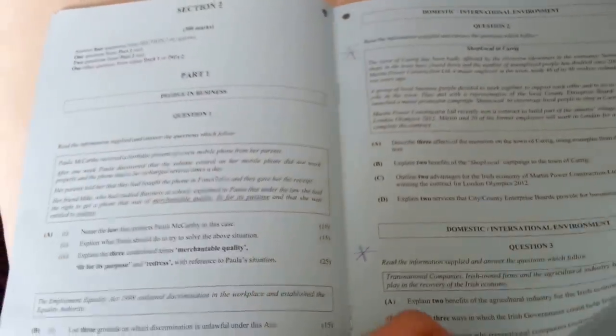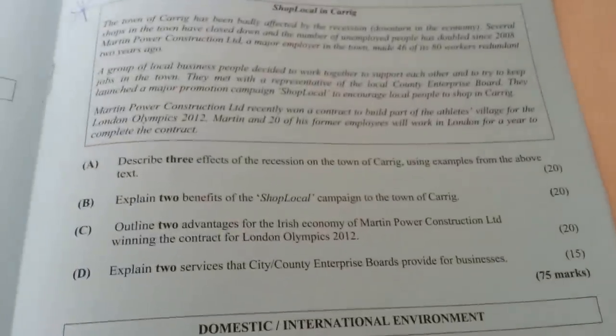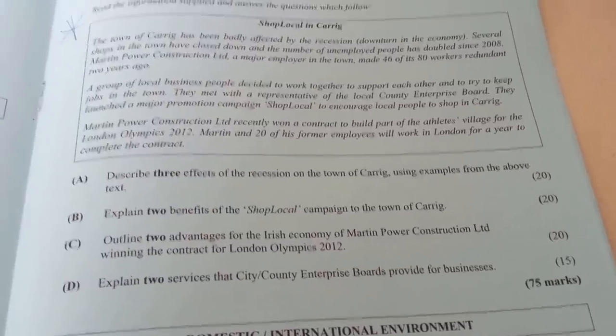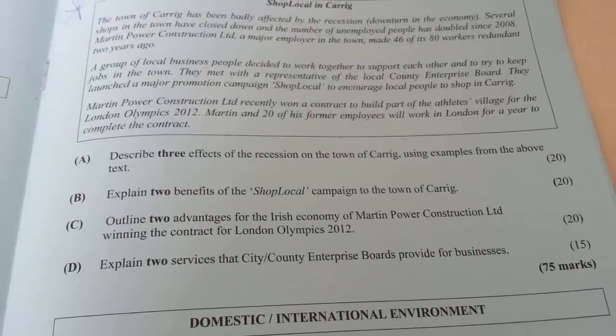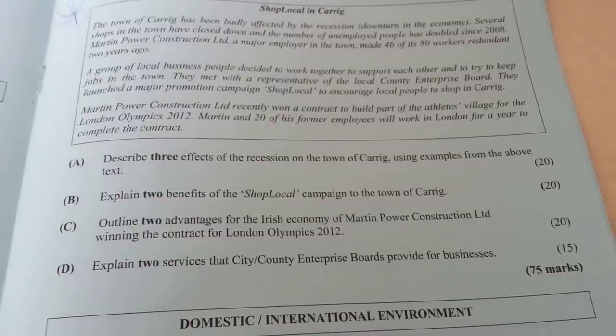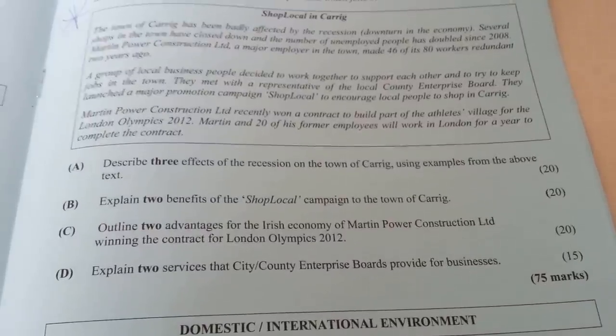Now with long questions as well, some of them can be quite easy. For most of these long questions they give you a little story, and then you answer questions, some of which can be answered because the story gives you clues. Like: describe three effects of the recession on the town of Carrick using examples from the text - that's like a comprehension, you just use examples from the text you just read. Two benefits of the Shop Local campaign to the town of Carrick - probably that it helps support local businesses and it brings money into the town. Such a nice question, so easy.